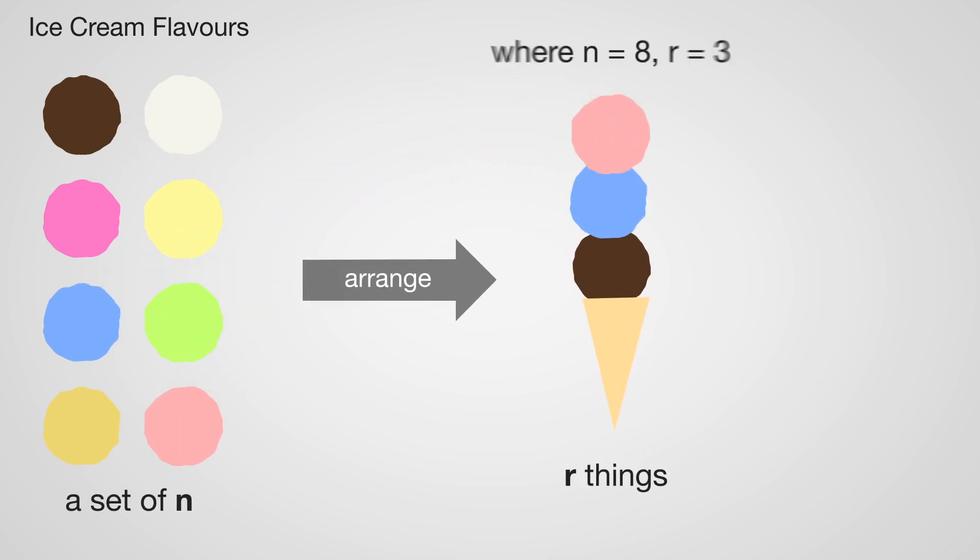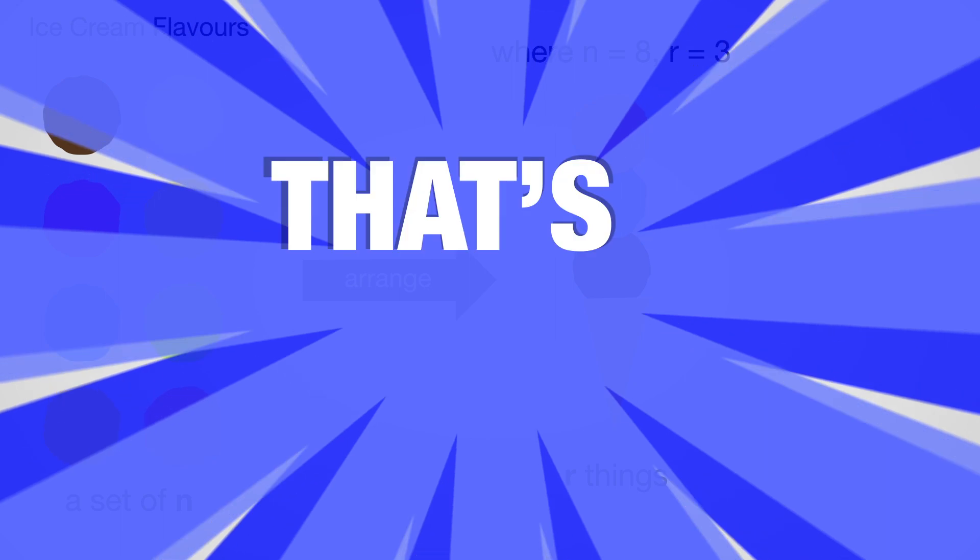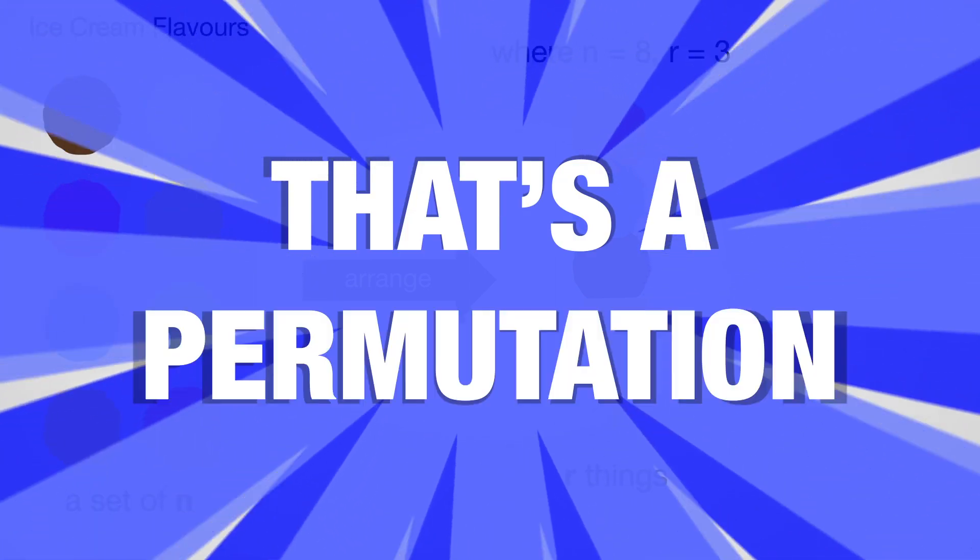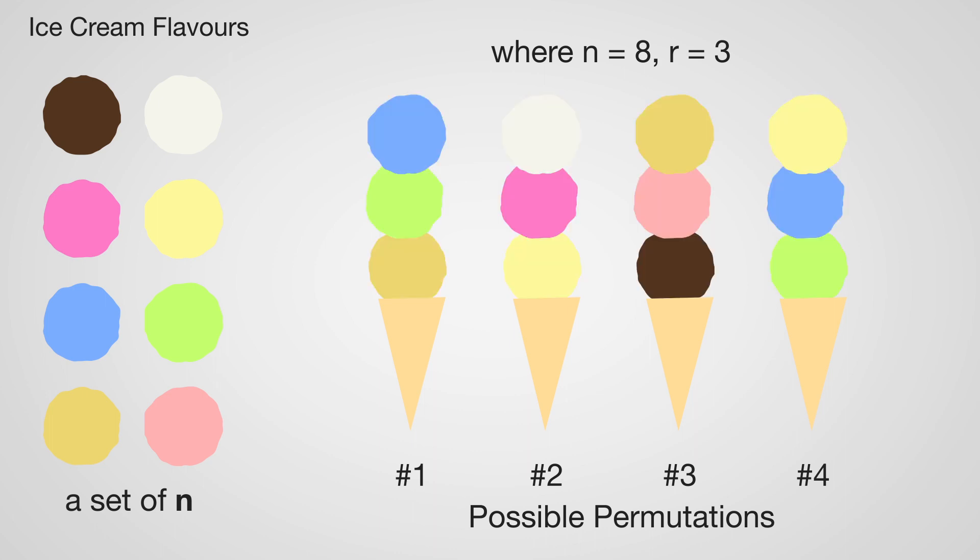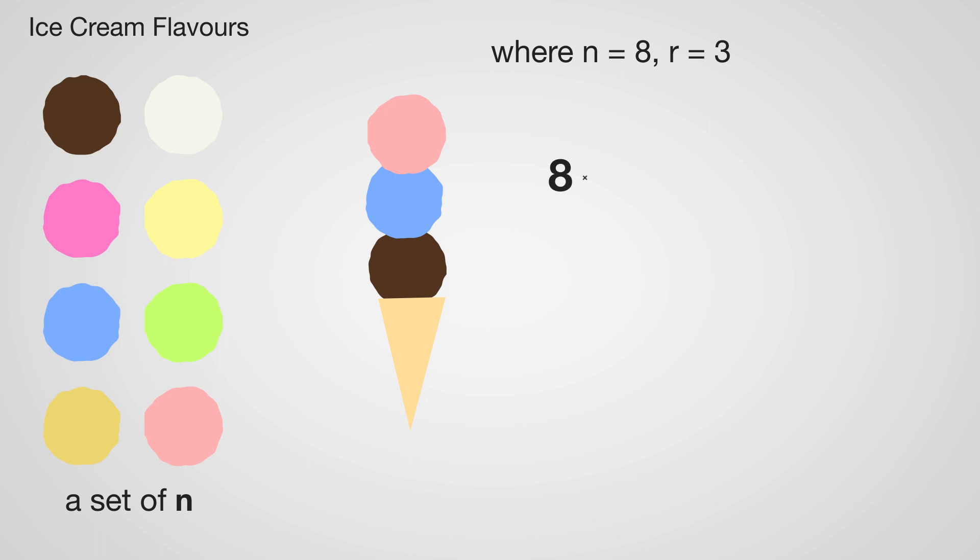And that's a permutation: when the order of things matters. A straightforward calculation—n multiplied down to one, or n factorial. It's not an exclamation.